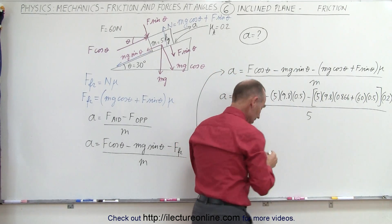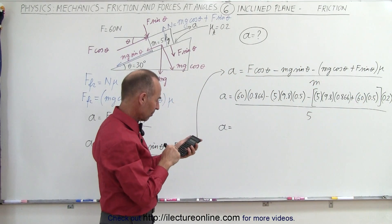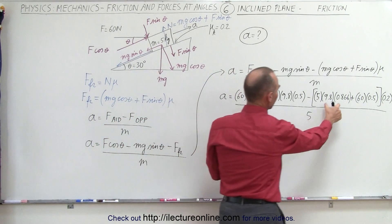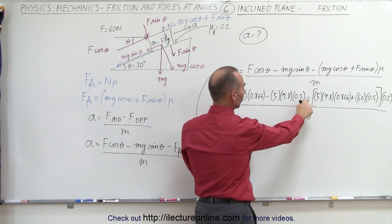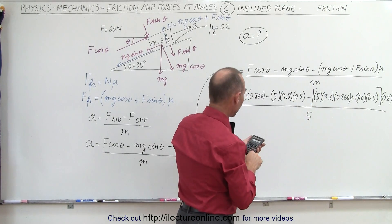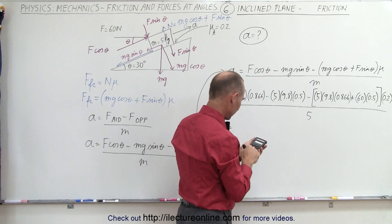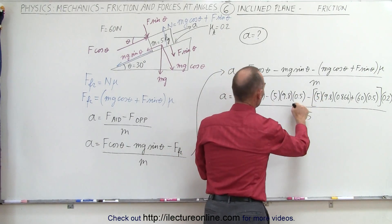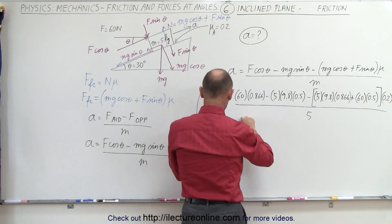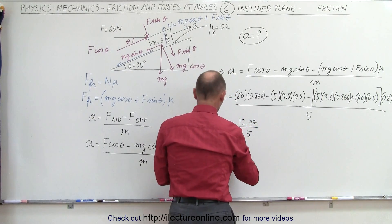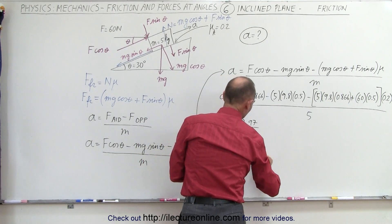Working through the calculation with a calculator: computing 49 × 0.866 plus 30, then multiplying by 0.2 for the friction term, subtracting that along with 49 × 0.5 for the weight component, and adding 60 × 0.866. On the numerator we get 12.97, divided by 5, giving an acceleration of 2.59 meters per second squared.